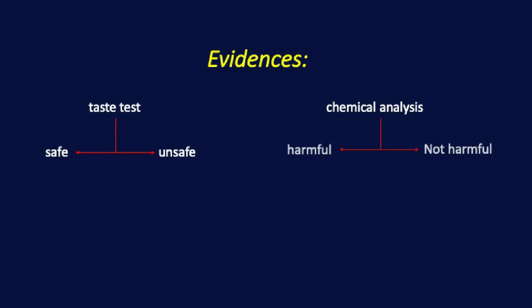We can represent the evidence from the taste test as a belief function that assigns a probability of 0.8 to the set of people who rate the food item as safe, and a probability of 0.2 to the set of people who rate it as unsafe. Similarly, we can represent the evidence from the chemical analysis as a belief function that assigns a probability of 0.7 to the set of food items that do not contain the harmful chemical, and a probability of 0.3 to the set of food items that do contain the harmful chemical.